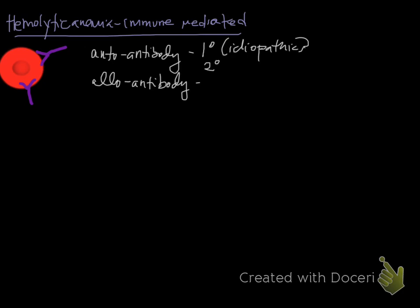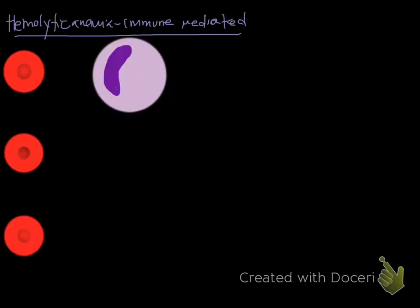Next we're going to talk about how you actually identify immune-mediated anemia and why the anemia forms, along with the auto-antibody or allo-antibody being produced. From this point on I'm not going to really differentiate auto from allo-antibody — most of the time it's going to be auto-antibody. The anemia forms because an antibody is attached to the red cell — again, it could be an auto- or allo-antibody.